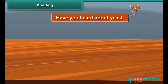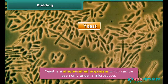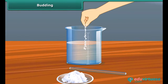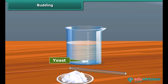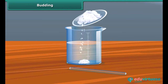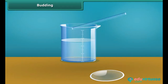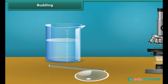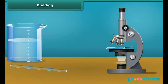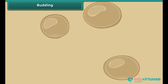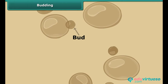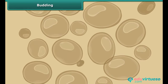Budding. Children, have you heard about yeast? It is a single-celled organism which can be seen only under a microscope. Take a pinch of yeast powder and place it in a beaker with some water. Add some sugar and swirl to dissolve it. After an hour or so, put a drop of this liquid on a watch glass and observe under a microscope. You will observe new yeast cells formed. The small bulb-like projection coming out of the yeast cell is called a bud. These buds grow, mature, and form new yeast cells.